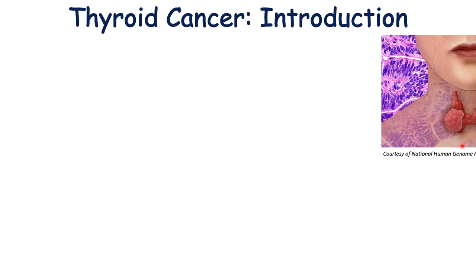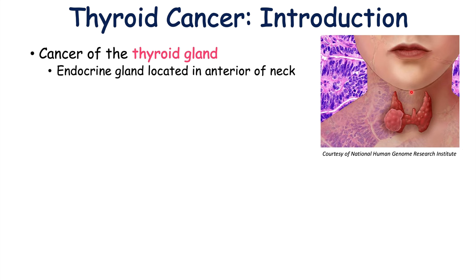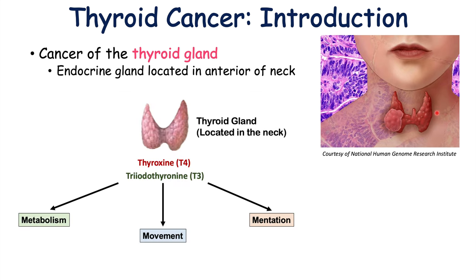Thyroid cancer is a cancer of the thyroid gland, and the thyroid gland is an endocrine gland located in the anterior of the neck or the front of the neck. The thyroid gland is responsible for making thyroid hormones like T3 or triiodothyronine and T4 or thyroxine. Both of these hormones are responsible for movement, mentation, and metabolism.